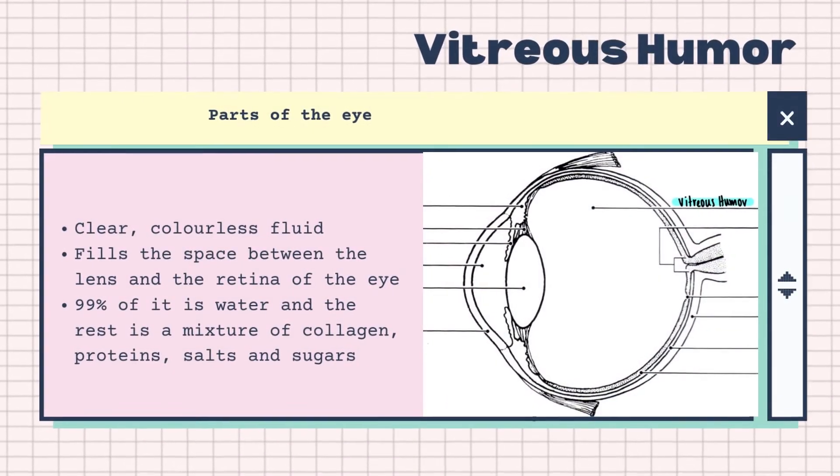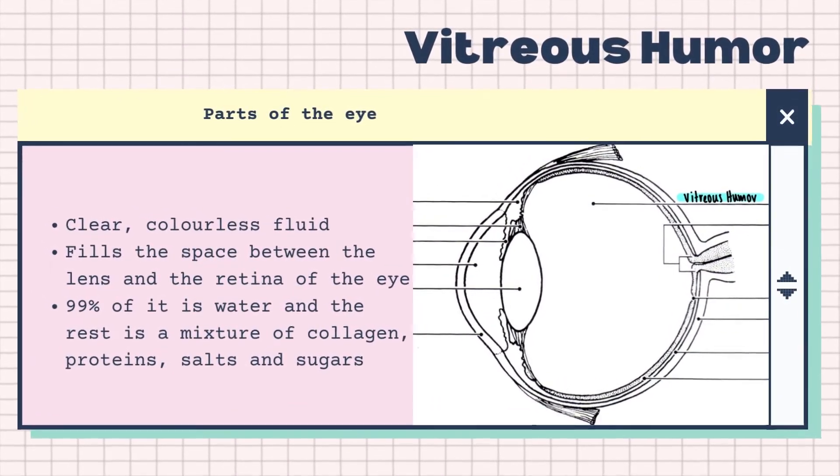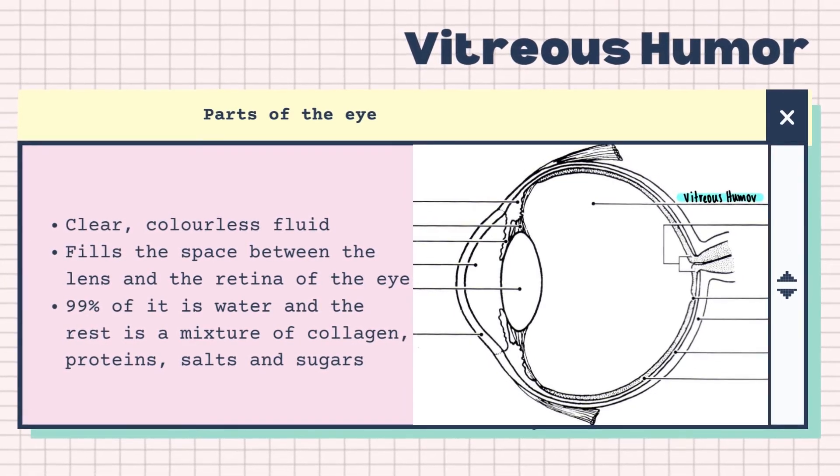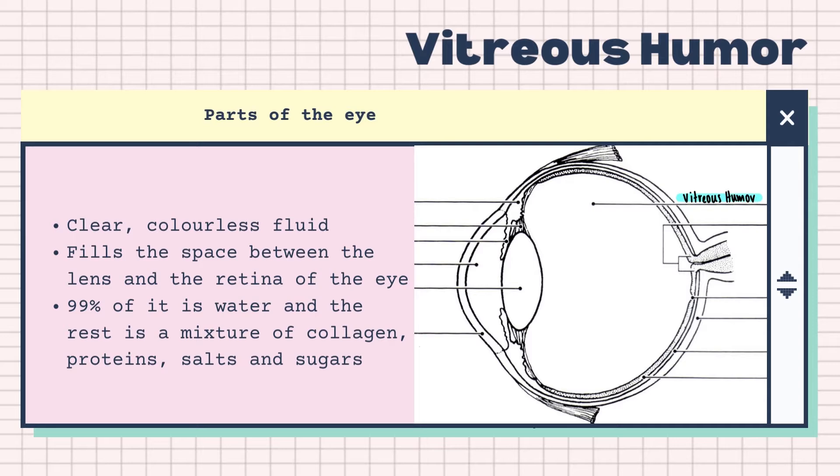The vitreous humor is a clear colorless fluid that fills the space between the lens and the retina of the eye. 99% of it consists of water and the rest is a mixture of collagen, proteins, salts and sugars.